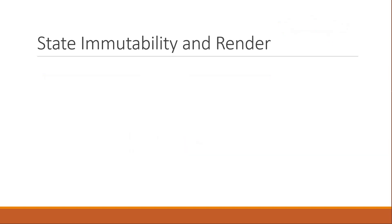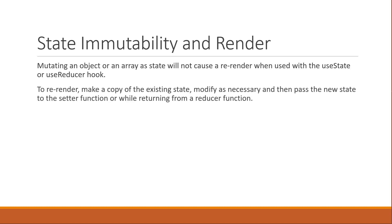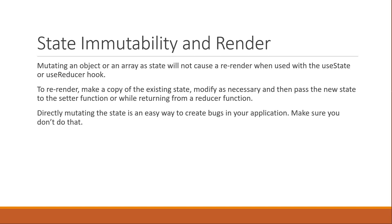To summarize: mutating an object or array as state will not cause a re-render when used with useState or useReducer. To re-render, make a copy of the existing state, modify it as necessary, and pass the new state to the setter function or return it from a reducer. Directly mutating state is an easy way to create bugs in your application. That covers rendering behavior in React when dealing with useState and useReducer hooks. In the next video let's talk about rendering with parent and child components. Thanks for watching — don't forget to subscribe.